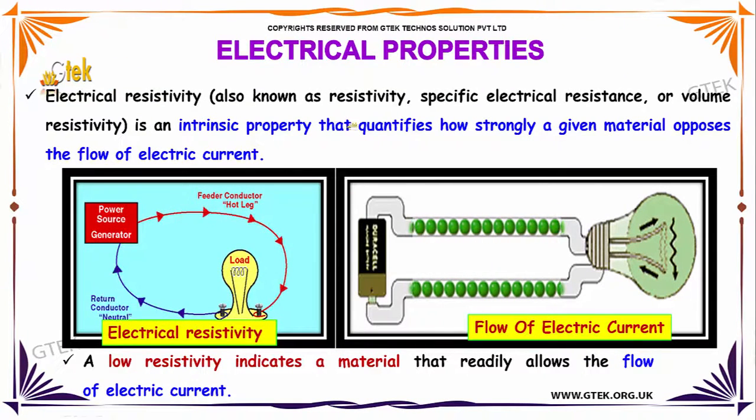It's an intrinsic property that quantifies how strongly a given material opposes the flow of current. A low resistivity indicates a material that readily allows the flow of electric current. You are able to see the flow of electric currents and here is the electrical resistivity.